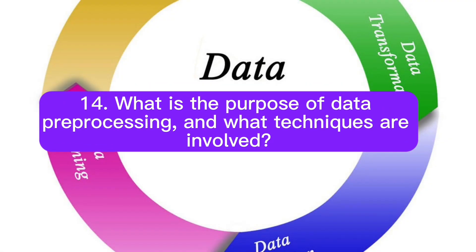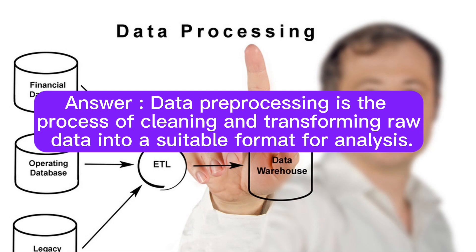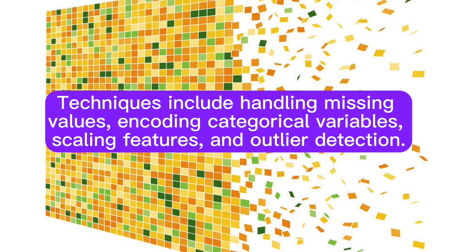Question 14: What is the purpose of data preprocessing and what techniques are involved? Answer: Data preprocessing is the process of cleaning and transforming raw data into a suitable format for analysis. Techniques include handling missing values, encoding categorical variables, scaling features, and outlier detection.